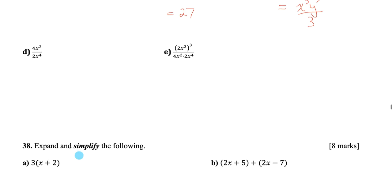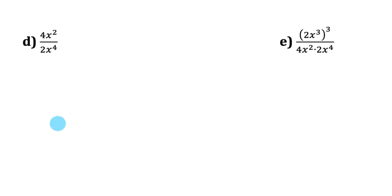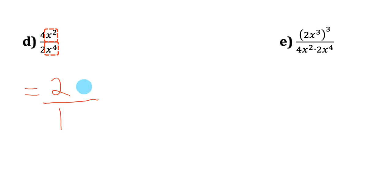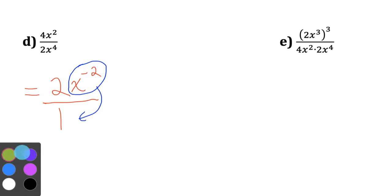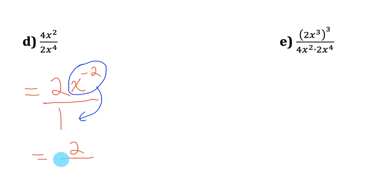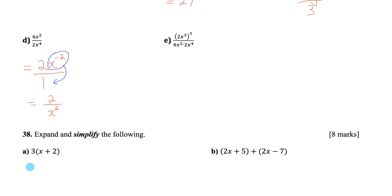Part D: Divide the constant factors — 4 divided by 2 is 2. For x factors: subtract exponents — 2 minus 4 is negative 2. Never leave a negative exponent in your answer — move x to the negative 2 to the denominator, changing the sign. Final answer: 2 over x squared.